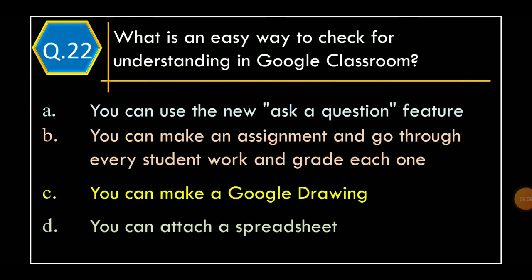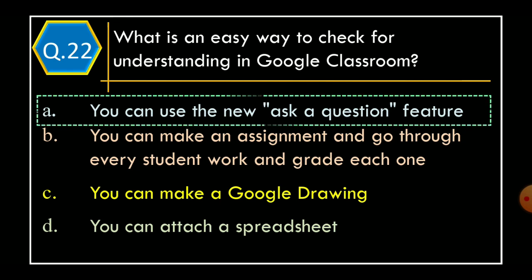Question 22: What is an easy way to check for understanding in Google Classroom? Option A: You can use the new ask a question feature, Option B: You can make an assignment and go through every student's work and grade each one, Option C: You can make a Google drawing, Option D: You can attach a spreadsheet. And correct option is Option A: You can use the new ask a question feature.